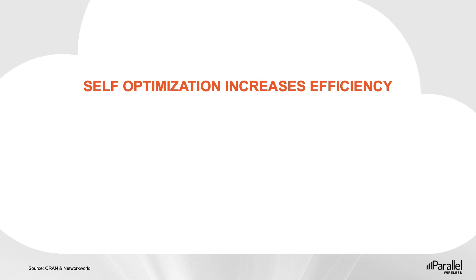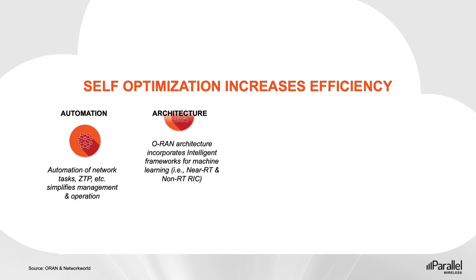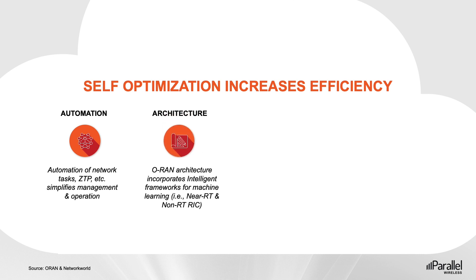As mobile networks grow more complex, dense, and costly to operate, the self-learning and self-optimizing capabilities found in an Open RAN solution will be important to efficiently manage the network. This self-optimization capability comes from multiple areas. For example, automation of network tasks and zero-touch provisioning, or ZTP, help simplify management. Automation will be a foundation for operators executing at scale without dramatically increasing support staff.